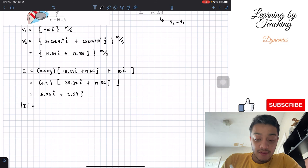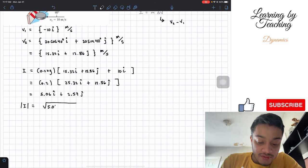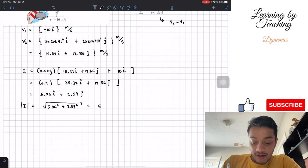We're going to represent it by the absolute value symbol. In order to do that, we're going to do the square root of 5.06 squared plus 2.57 squared. If we plug that into our calculator, we're going to get a total of 5.67.